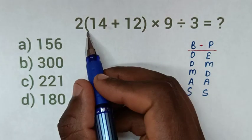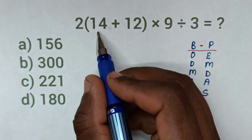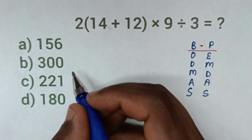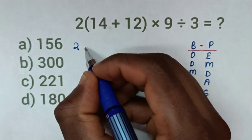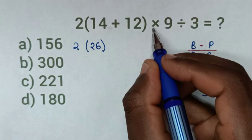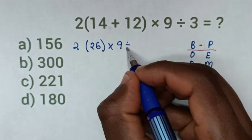Inside the bracket, we have addition operation. So, this addition of 14 + 12 is 26. Then, it will be 2(26) × 9 ÷ 3.